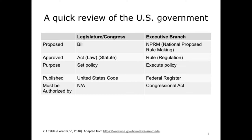The act is published in the United States Code, and Congress is the one that creates, votes on, and approves these acts. They are then signed by the president. The executive branch is responsible for creating regulations that implement and execute congressional acts. This starts out with a proposed regulation, called an NPRM, or Notice of Proposed Rulemaking. When the proposed rulemaking is finalized, it becomes a regulation, or a rule, and its purpose is not to set policy, but to execute policy.